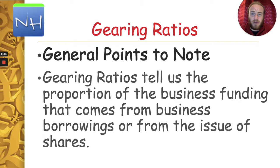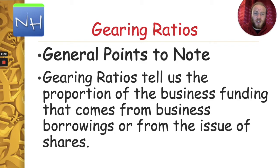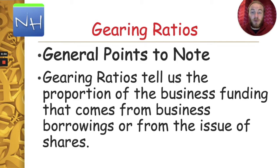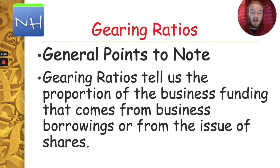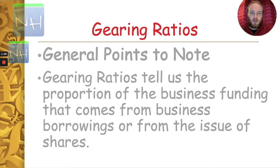So what is a gearing ratio? A gearing ratio tells us the proportion that the business funding comes from business borrowings or from the issue of shares. In other words, how much money does the business need to operate, and where do they get this money from? They can get it from two main sources generally speaking: either from borrowing money or through selling ownership of the firm.